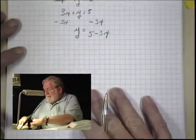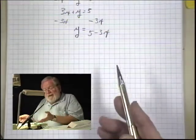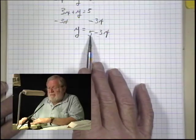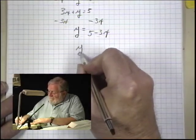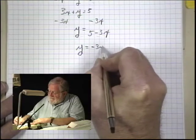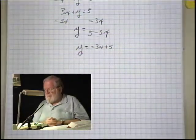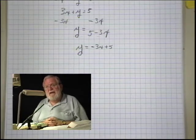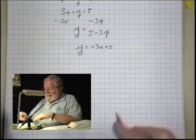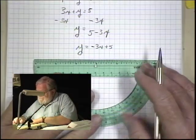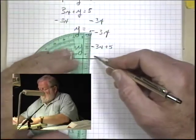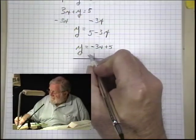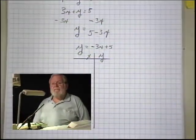This is the correct answer, but it's not quite the proper form. We like to have our x term first followed by the whole number. So the proper form would be y equals -3x plus 5. We just switch these around. Now we have our formula in proper form, and we can start to generate some ordered pairs.